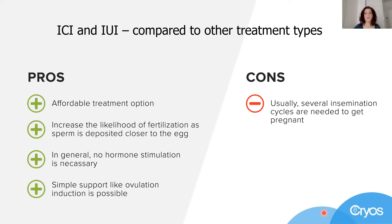It is an easy method that can be optimized with ovulation induction if necessary. On the other hand, it is also the treatment type with the lowest success rates. In terms of pregnancy rates, an insemination cycle has a likelihood of achieving a pregnancy of eight to fourteen percent, so in general several insemination cycles are needed in order to get pregnant.